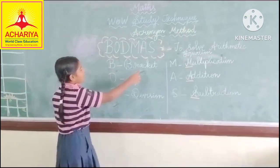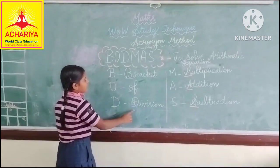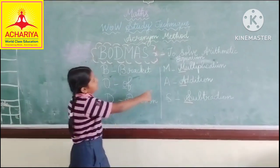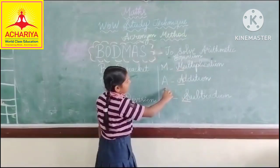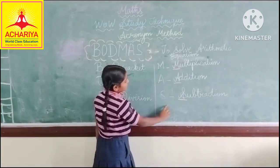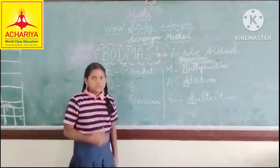Code math: B for Brackets, O for Of, D for Division, D for Multiplication, A for Addition, S for Subtraction. Thank you.